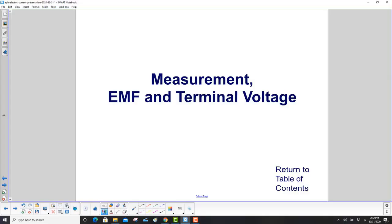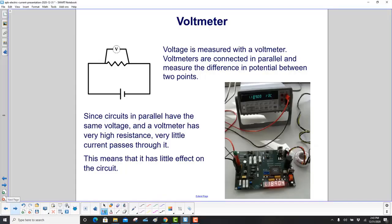Measurement of EMF and terminal voltage. Voltmeter: voltage is measured with a voltmeter, which are connected in parallel with whatever you're measuring. Here's the voltmeter measuring the voltage across this resistor. They measure the difference in potential between two points. Since circuits in parallel have the same voltage and a voltmeter has very high resistance, very little current passes through it. This means it has little effect on the circuit. Whatever the voltmeter reads will be the voltage across that resistor.